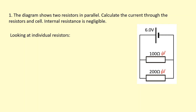Now that I know two things about each of the resistors, I can work out the third thing. In this case, I can work out the current by doing V over R. So the first one is going to be six volts over 100, so the current of the first branch is going to be 0.06 amps. And if I do the same thing for the next one, I'm doing six over 200, and that gives me 0.03 amps.